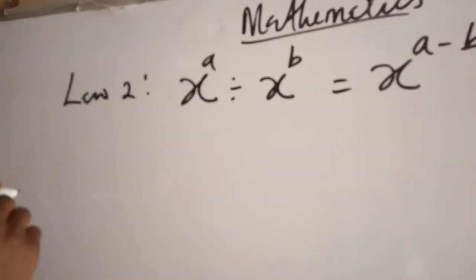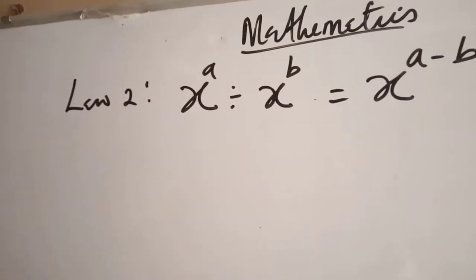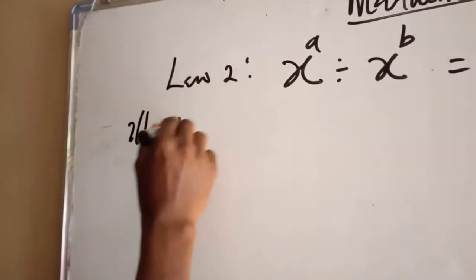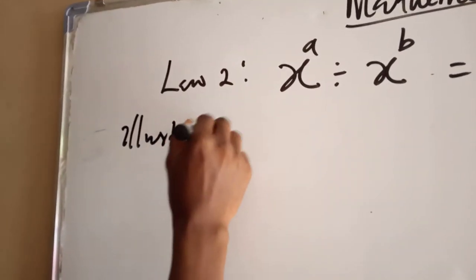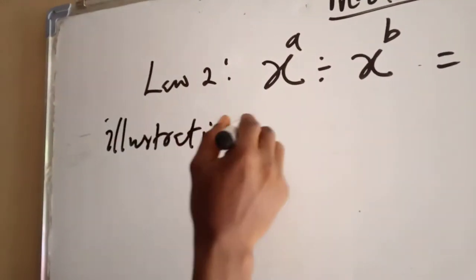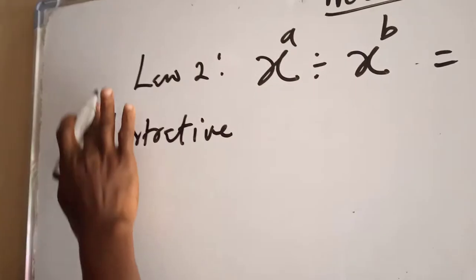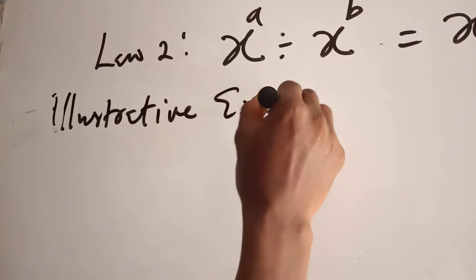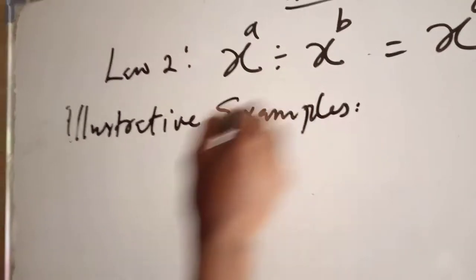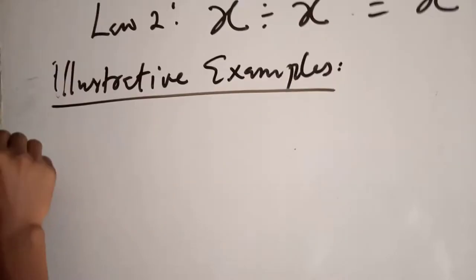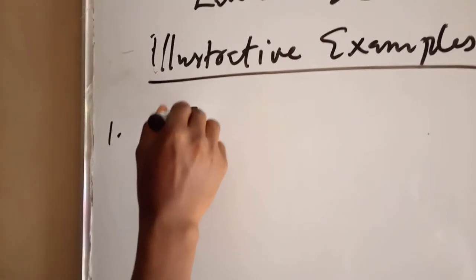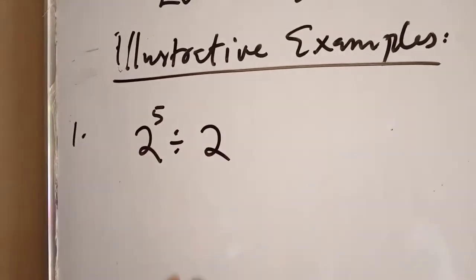We're going to illustrate with a few examples now. Illustrative examples. Number 1: 2 raised to the power of 5 divided by 2 raised to the power of 2.